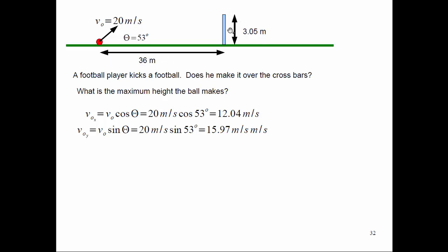The kicker is about 36 meters away and the crossbar is about 3.05 meters high — about 3 yards, as we see on a football goal post. We need to find out if the ball makes it over, and what the maximum height is. If I want to find out if it makes it over the crossbar, I can't use the maximum height.